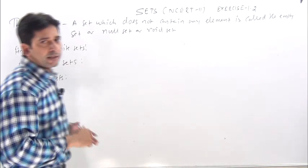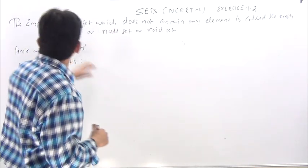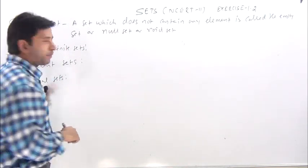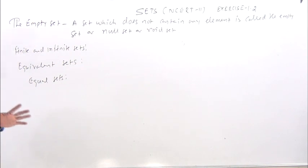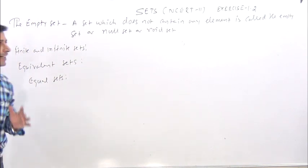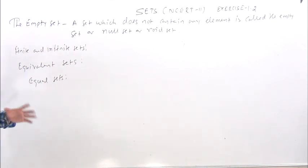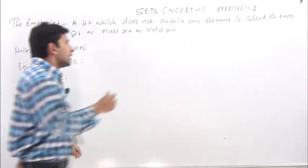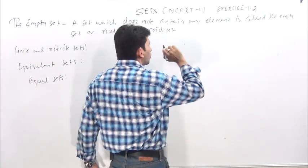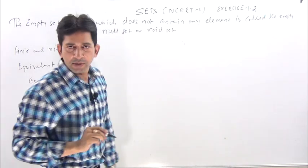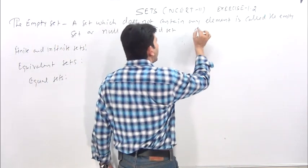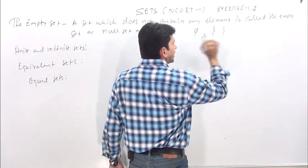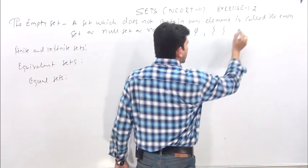Next exercise. The empty set: the empty set means a set which does not contain any element. It is called the empty set, or null set, or void set. Any set in which there is no element, we call null set or empty set, denoted by phi or brackets.